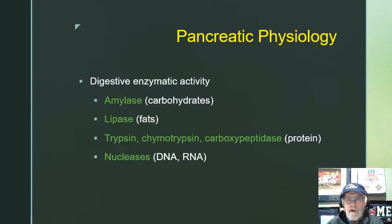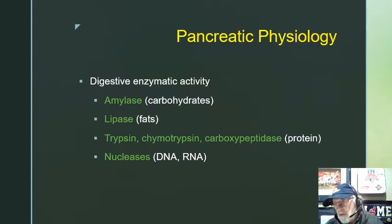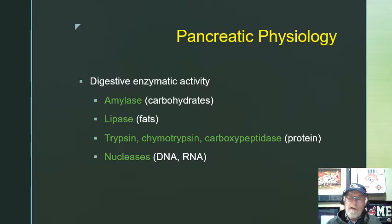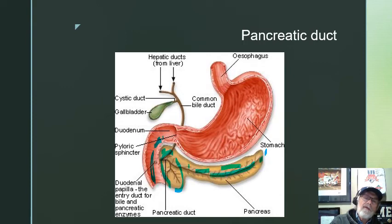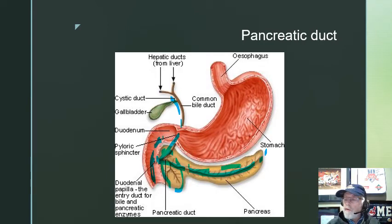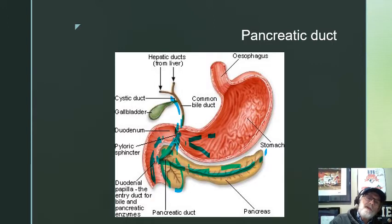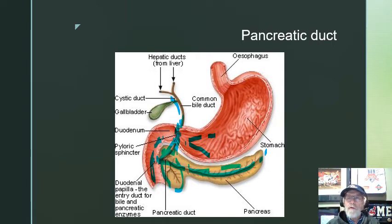Looking again at these enzymes: amylase breaks down carbohydrates, lipase breaks down fats, trypsin, chymotrypsin, and carboxypeptidase break down proteins. We also have nucleases that will actually pull apart DNA and RNA, because everything we eat has some DNA and RNA. Here you can see the duodenum with the head of the pancreas sitting in it, the pancreatic duct going up the middle, emptying with the common duct at the sphincter of Oddi — that's where both bile from the gallbladder and pancreatic enzymes are deposited. The duodenum starts at the pyloric sphincter.